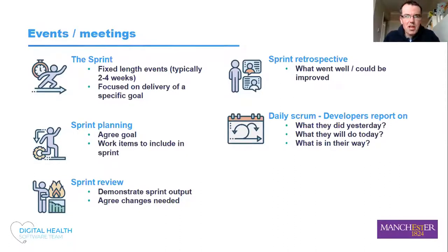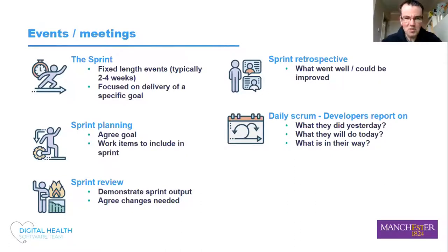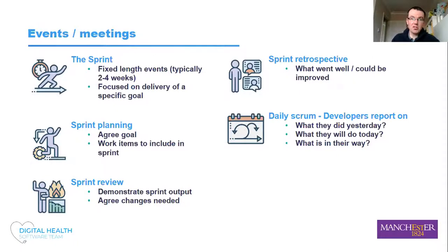The sprint is planned in a sprint planning meeting, where the goal or goals are agreed. Based on those goals and the prioritization of requirements by the product owner, work items are added into the sprint. At the end of the sprint, there are two meetings. One is the sprint review, where a demonstration of the sprint output is done — to share what was achieved, even if it wasn't what was originally planned — followed by discussion about what changes are needed to what has been delivered.